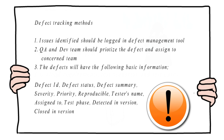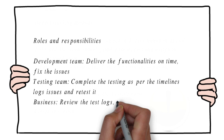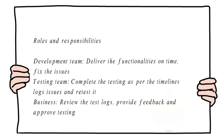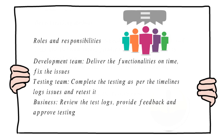The next component is roles and responsibilities. The roles and responsibilities for each of the parties in the project will be defined here. For example, the development team has to fix the defects raised by the testing team. The testing team has to find and log the issues, retest once fixed by the dev team, complete testing as per the plan, and send reports to the client. In the case of business, they have to review the test logs provided by the testing team, give feedback, and approve the test logs.